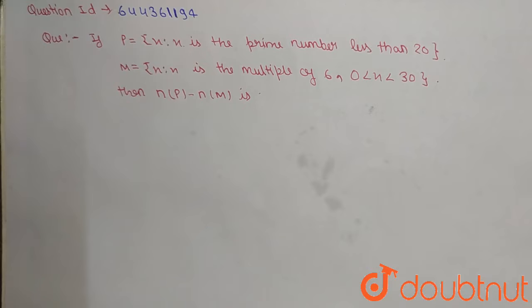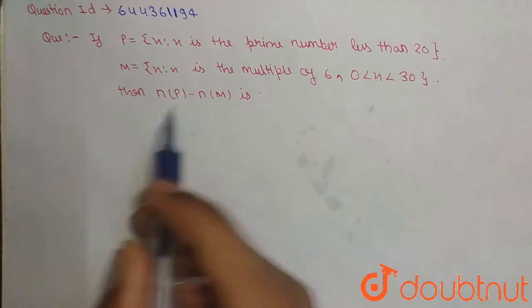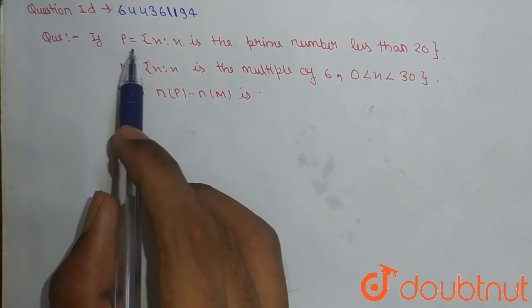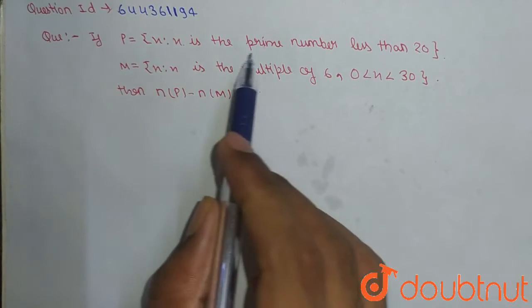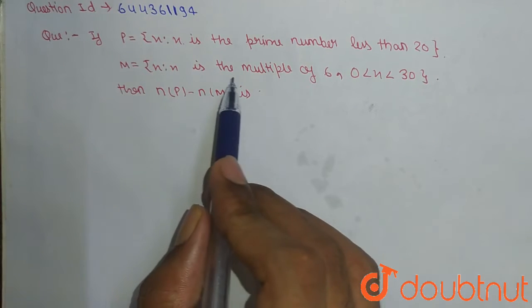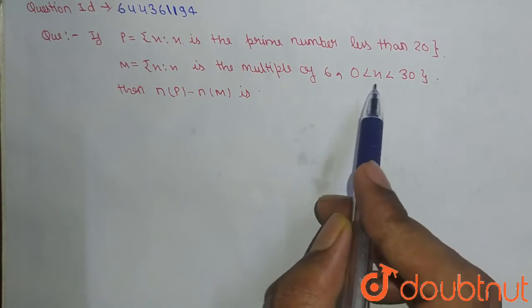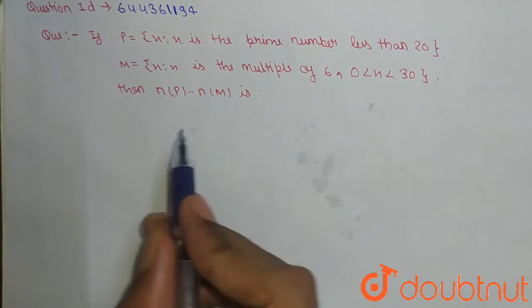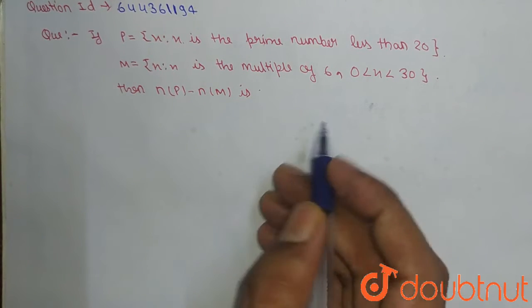Hello friends, our question is on sets and this question has two sets. The first set P is equal to X such that X is a prime number less than 20, and M is equal to X such that X is a multiple of 6 which is less from 0 to 30. Then we have to find n(P) minus n(M).